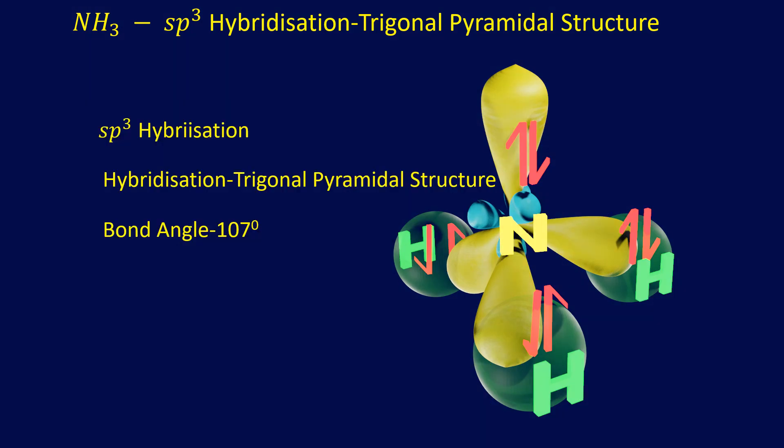Here, we summarize the structure of ammonia molecule. The hybridization is sp³. Structure is trigonal pyramidal. Bond angle between 2 NH is 107 degrees. 3 NH sigma bonds are present and 1 lone pair of electron is present.